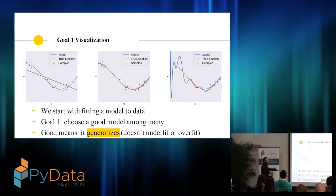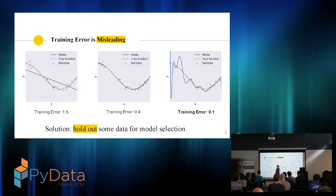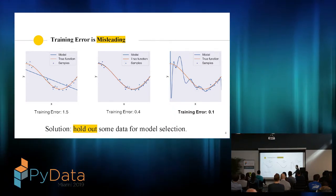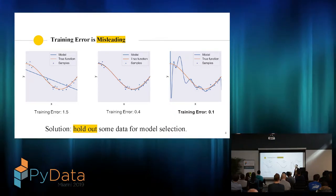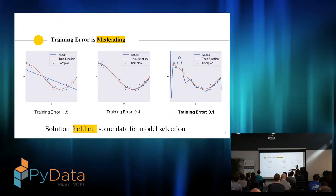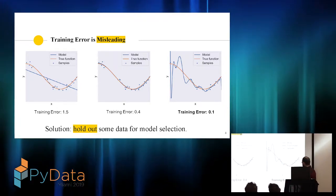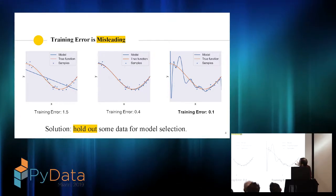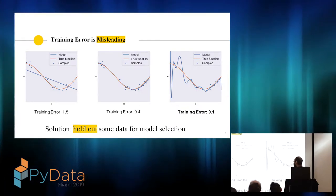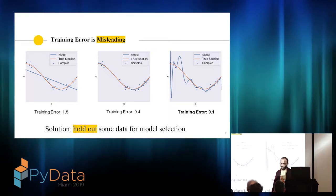The goal is to choose a model that generalizes. Training error is really misleading. Training error is when you take the training samples you have and evaluate the model you fit. Maybe it can detect underfitting — the training error is really large and you can tell that's a bad model — but it can't detect overfitting, because you're evaluating on the data used to fit. So you need to just hold out some of your data for evaluation purposes to help you choose a model.